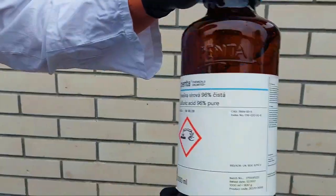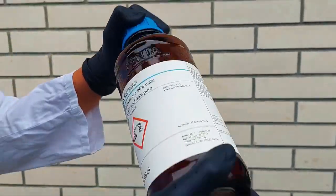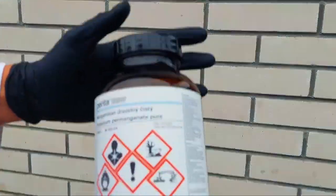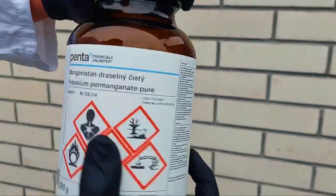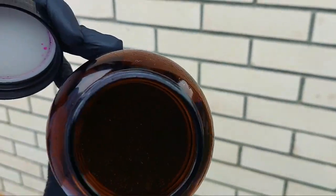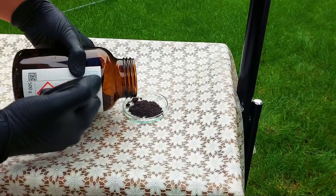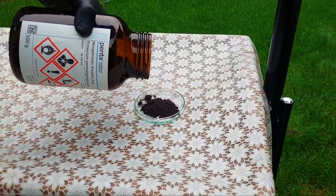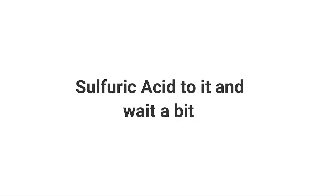To do that we will need some concentrated sulfuric acid, some potassium permanganate, and a petri dish. Firstly we need to add some permanganate to a dish, and then we need to add some concentrated sulfuric acid to it and wait a bit.